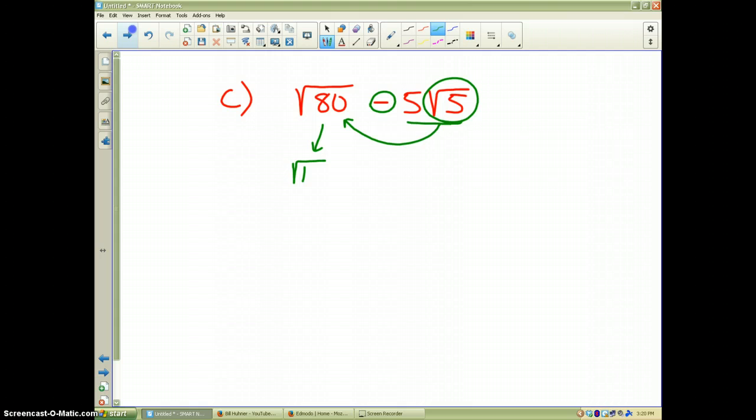Well, that works out nicely because the square root of 80 can be written as the square root of 16 times the square root of 5. We all know the square root of 16 is the number 4, so that becomes 4 square roots of 5.